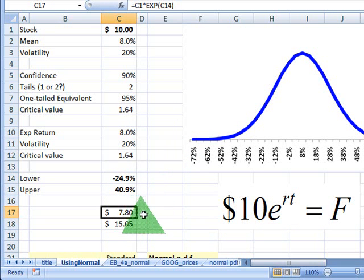Here's $7.80 at the low end, $15.05 at the upper end. But those bound a 90% confidence interval on the future stock price.